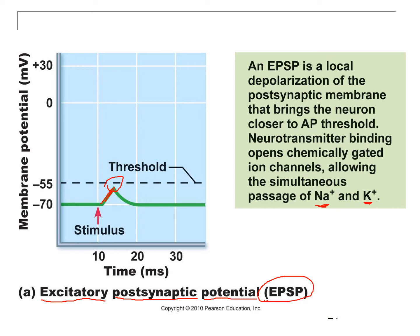In IPSPs, with hyperpolarization, one of two things happens. An IPSP can let potassium out — moving your potential downwards — or let chloride ions in. If you let a chloride ion in, that's a negative charge, and that will also lower your stimulus. So an EPSP involves sodium-potassium channels. An IPSP can involve either potassium channels or chloride channels.